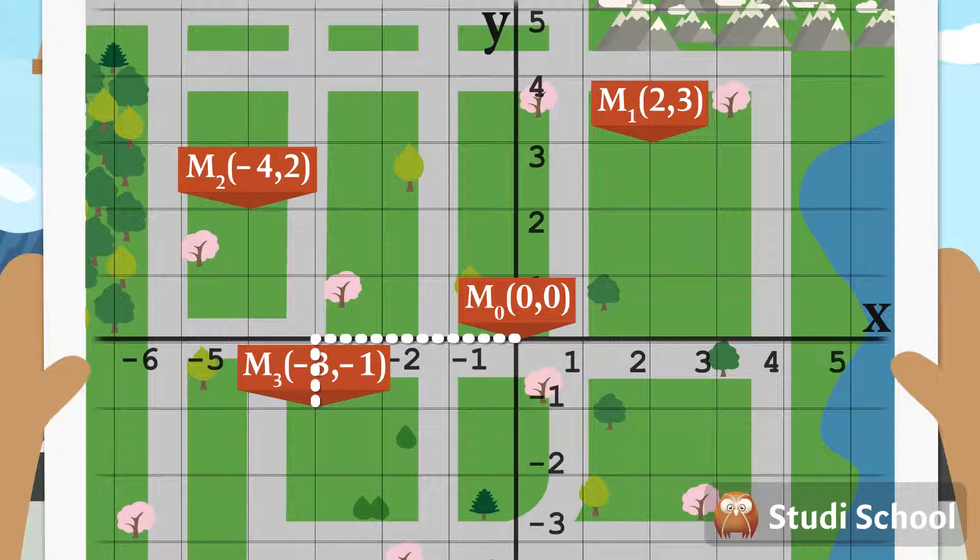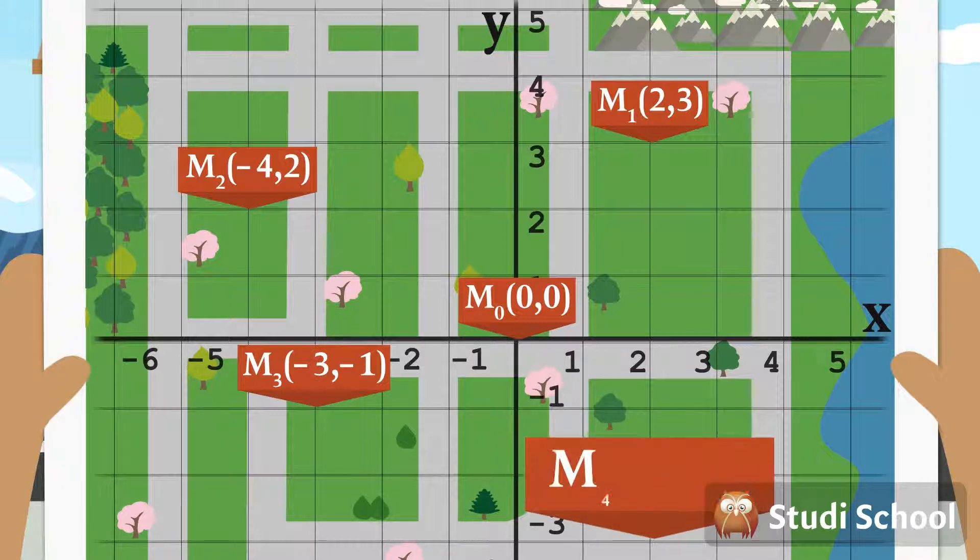By locating each coordinate, we can find where they meet. The school Mary attends is located at M4, which has an X-coordinate of 2 and a Y-coordinate of -3. A positive X-coordinate means we move right and a negative Y-coordinate means moving down.